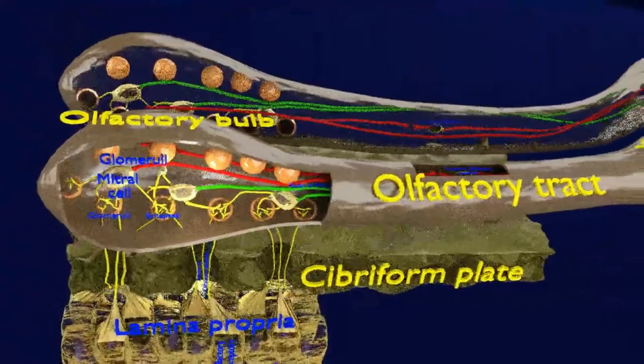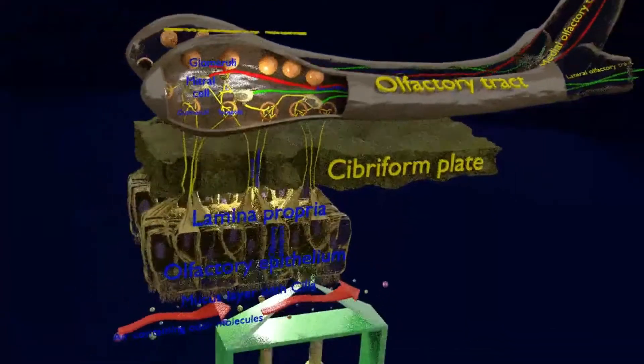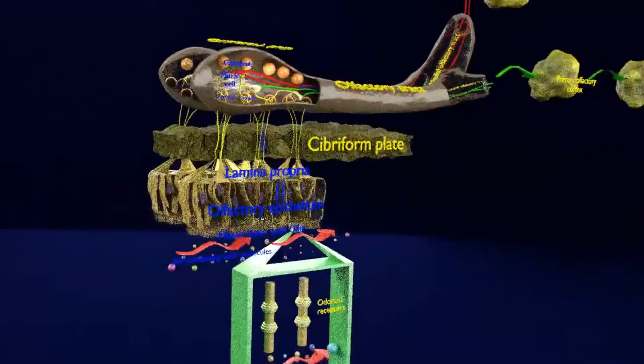The olfactory bulb is separated from the nasal cavity via the cribriform plate of the ethmoid.